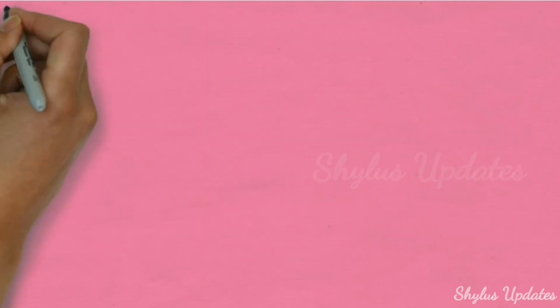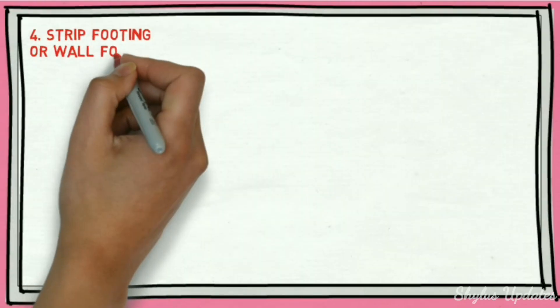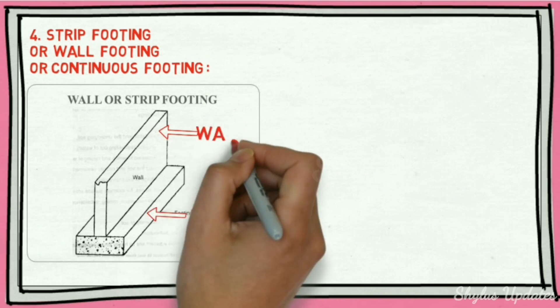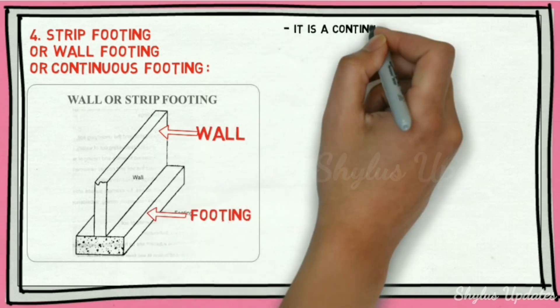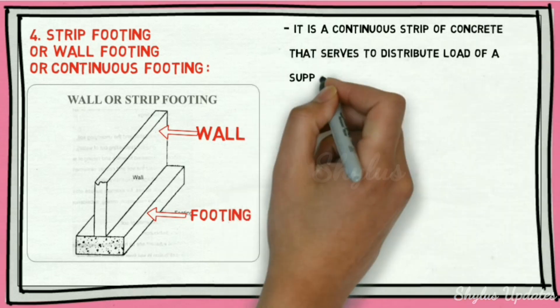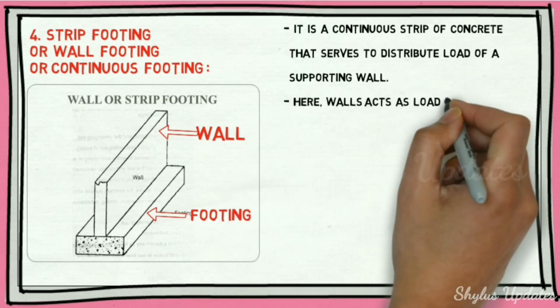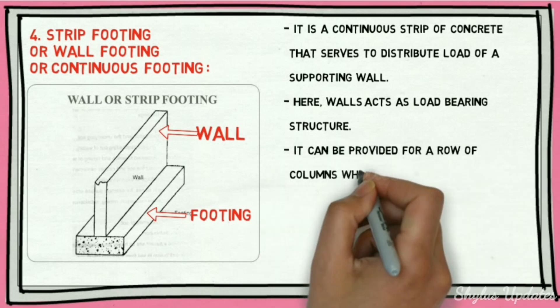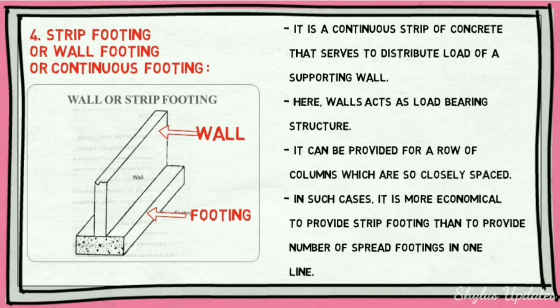Strip footing, also called wall footing or continuous footing, is a continuous strip of concrete that serves to distribute the load of a supporting wall. Here the wall acts as a load-bearing structure. It can also be provided for a row of closely spaced columns, in which case it is more economical to provide strip footing than individual spread footings in one line.